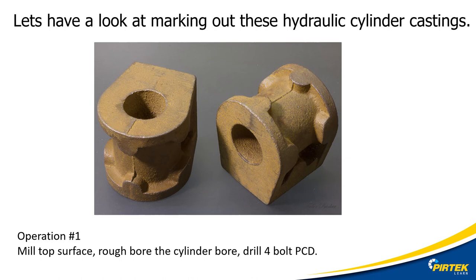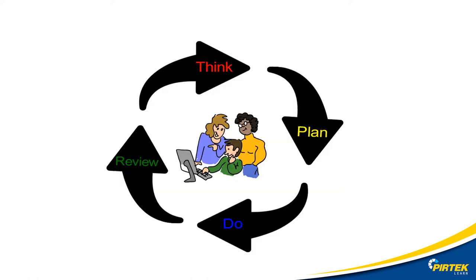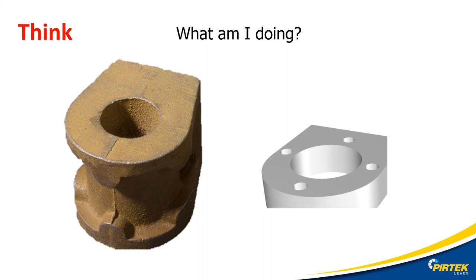Let's have a look at a real-life marking out job. Here we're going to mark out this hydraulic cylinder casting. We'll need to machine the surface, machine the bore, and drill four holes on a PCD. I've only got one casting — I can't stuff this up — so I'll need to think about the job, plan the job, do the job, then review and check. What do I have to do to this casting? We're going to machine the surface, bore the cylinder bore out, and drill four mounting holes for a flange.